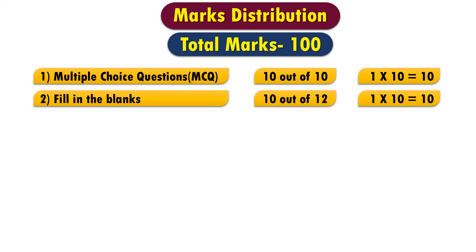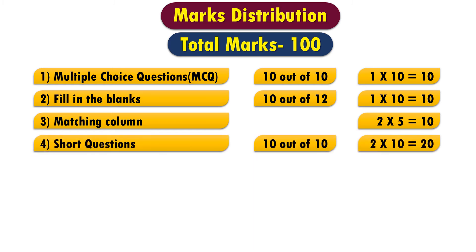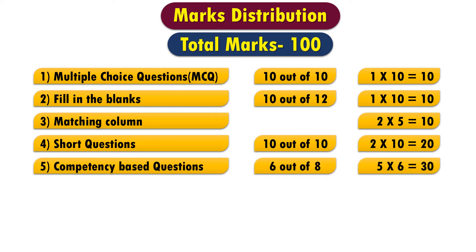In Part 2, you have to answer fill in the blanks — 10 out of 12, with every question worth one mark, totalling 10 marks. Then you have to match between two columns, write the complete sentence, and every matching is worth two marks — 5 × 2 equals 10 marks. Then you have to answer short questions — 10 out of 10, with every short question worth two marks — 2 × 10 equals 20 marks.